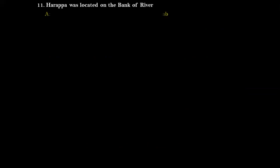Question eleven: Harappa was located on the bank of which river? Options are Ravi, Indus, Jhelum, and Chenab. The right answer is river Ravi. Harappa was located on the bank of river Ravi, which is actually a tributary of the Indus river.